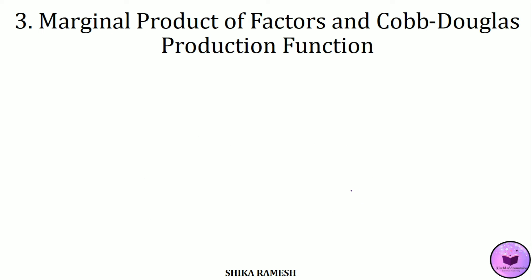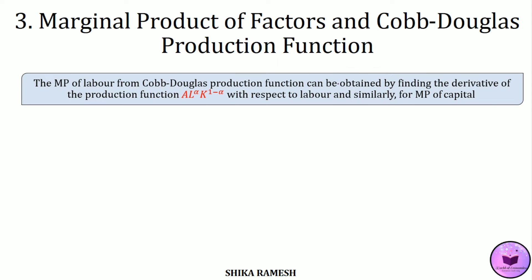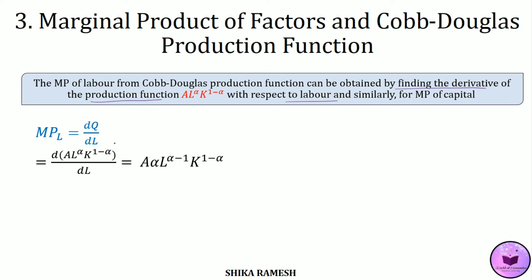The third property is to find out the marginal product of factors from the Cobb-Douglas production function. The marginal product of labor is obtained by finding the derivative of the Cobb-Douglas production function with respect to labor: MPL = ∂Q/∂L. Differentiating with respect to labor using the power rule, we get A·α·L^(α−1) K^(1−α).